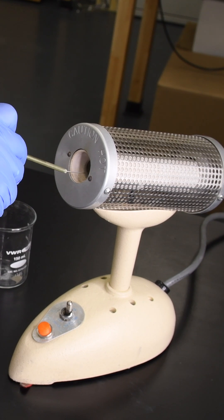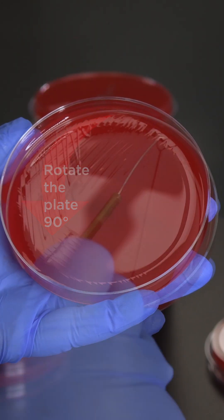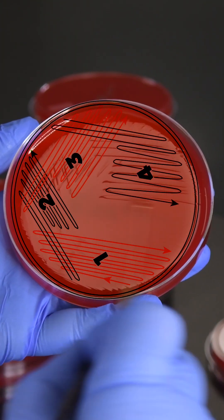Re-sterilize and cool the loop one last time before continuing. Turn the plate a final 90 degrees and streak the cells from quadrant three into quadrant four.